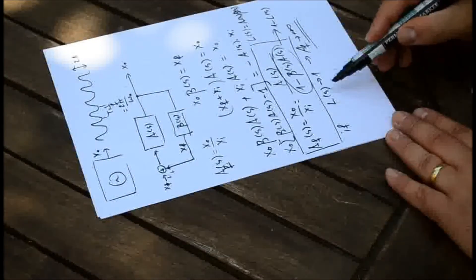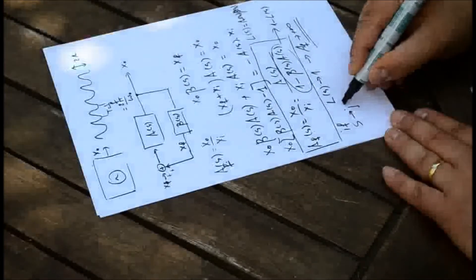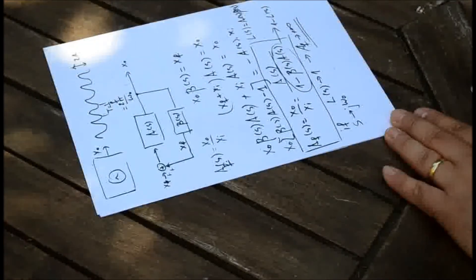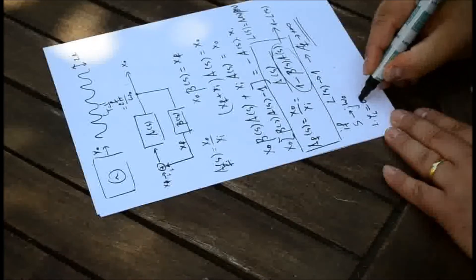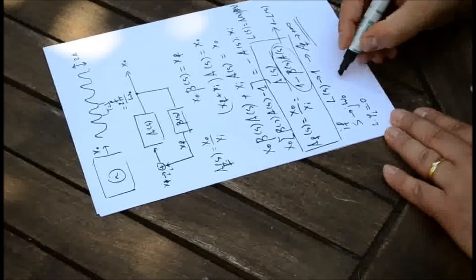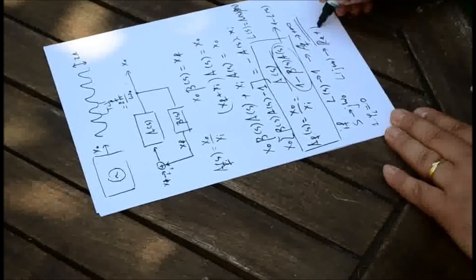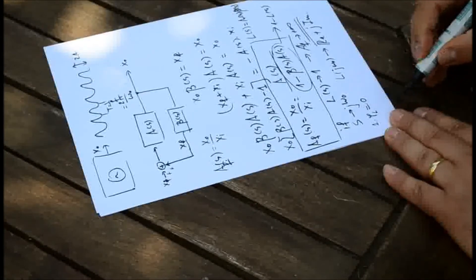So let's see what these conditions are. The loop gain L(S), evaluated for sine wave signals by substituting s = jω₀ where ω₀ is the frequency of oscillation, must equal 1. In the most generic form, L(jω₀) has a real part and an imaginary part. The first condition is that the phase of the loop gain equals 0, which requires the imaginary part to be zero. This means the phase rotation of the loop gain is 0 degrees, or equivalently 360 degrees.